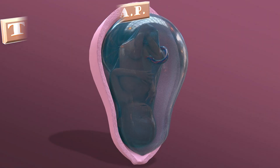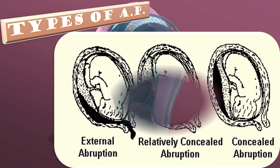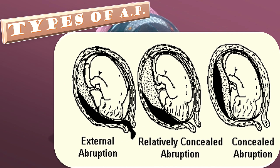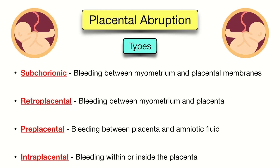The types of abruptive placenta include external abruption, relatively concealed abruption, and concealed abruption. Another classification includes subchorionic abruption, which is bleeding between the myometrium and placental membranes; retroplacental abruption, which is bleeding between the myometrium and placenta; pre-placental abruption, which is bleeding between the placenta and amniotic fluid; and intraplacental abruption, which is bleeding within or inside the placenta.